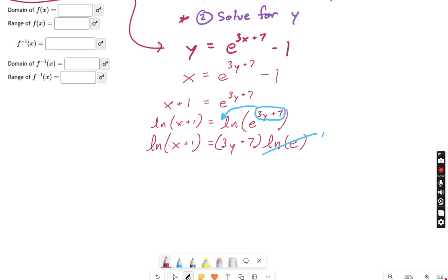Now that's pretty nice. If we just subtract 7 from both sides, you'll see that I'm nearly there, and now we just need to divide by 3. So I got natural log of x plus 1 minus 7, all divided by 3, equals y. That is our inverse function. That was the goal here. So this is our answer.